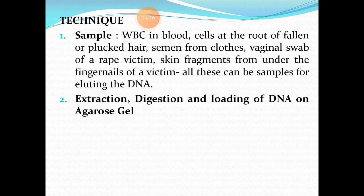Now let us study each step in detail. The first step is the sample. WBCs in blood can be used — RBCs cannot be the sample because they are enucleate and don't have a nucleus. Other samples include cells at the root of a fallen or plucked hair, semen from clothes in a rape case, vaginal swab of a rape victim, skin fragments under the fingernails of a victim, and sometimes even drops of tears.